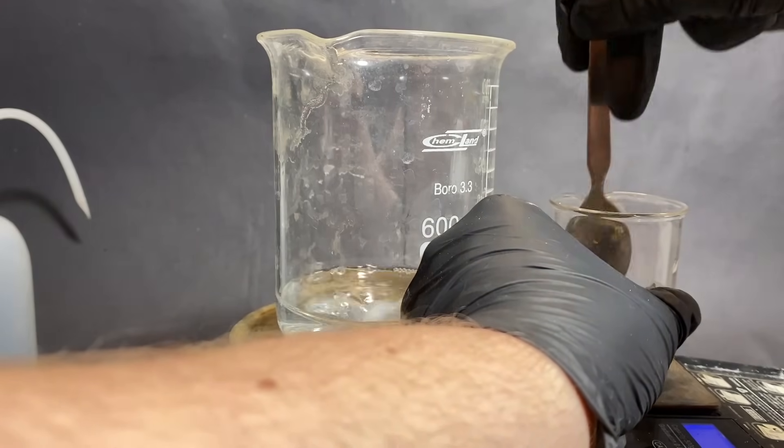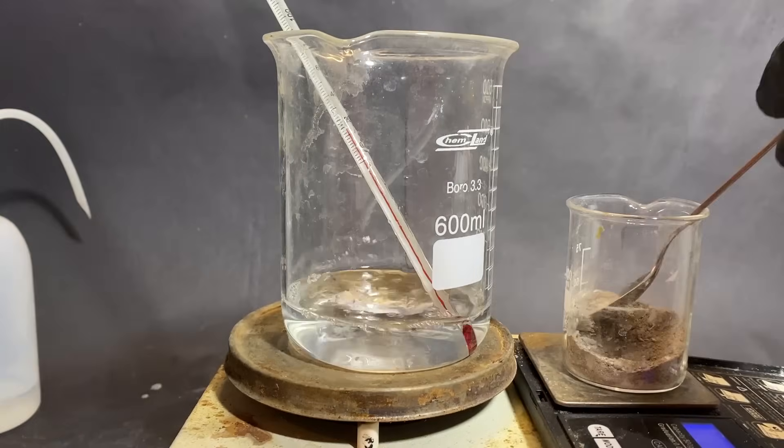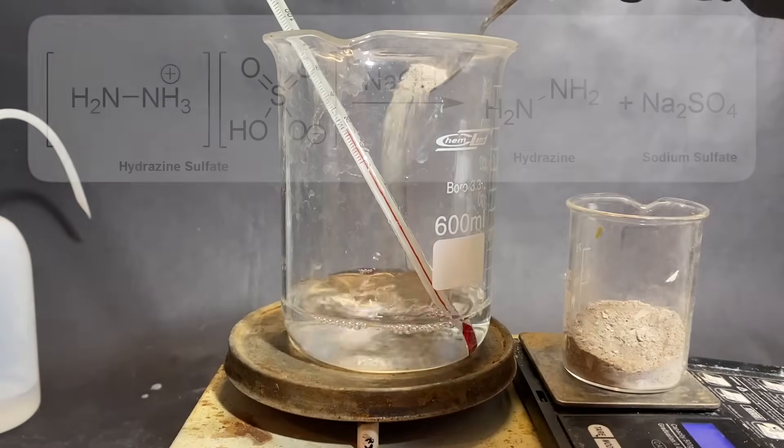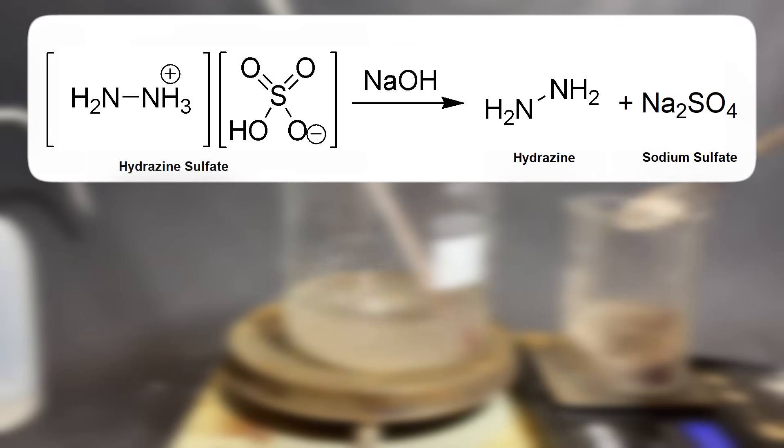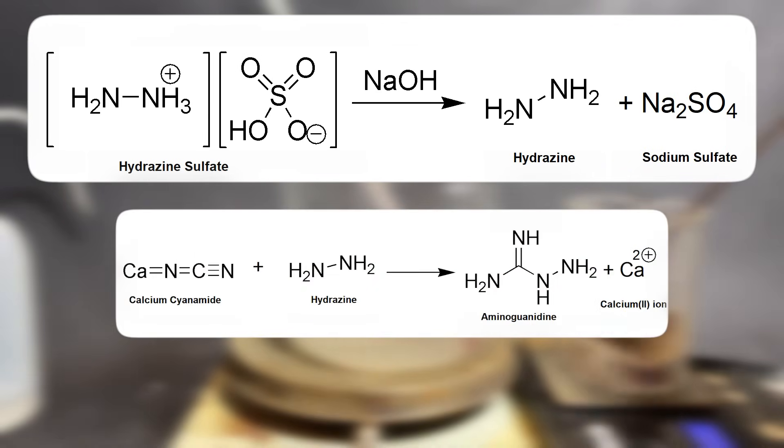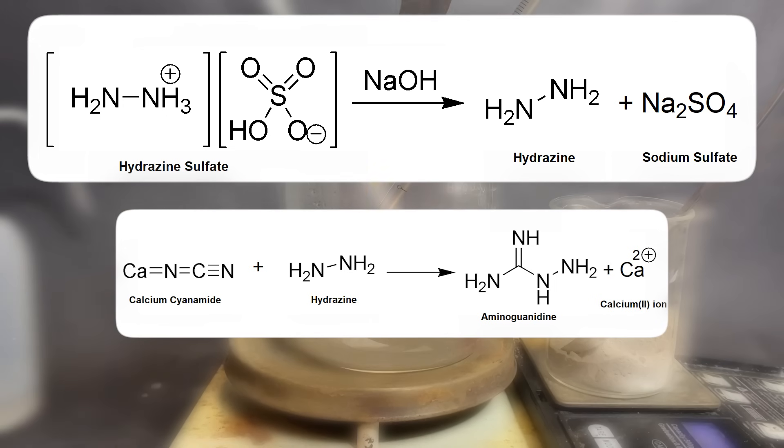Now let's start adding the mix. Once the hydrazine sulfate falls into the basic solution, it turns into its freebase form, which dissolves in the water, and it reacts with the calcium cyanamide to form aminoguanidine and calcium sulfate.